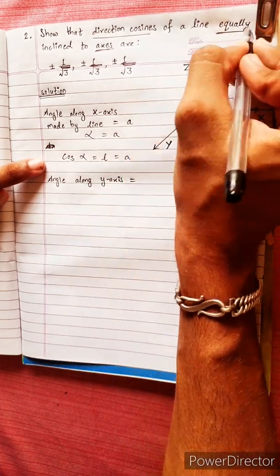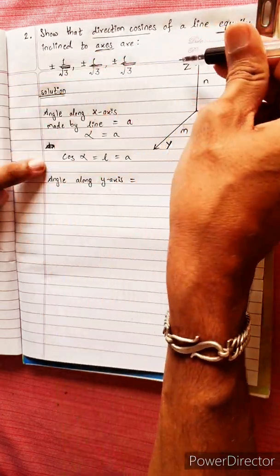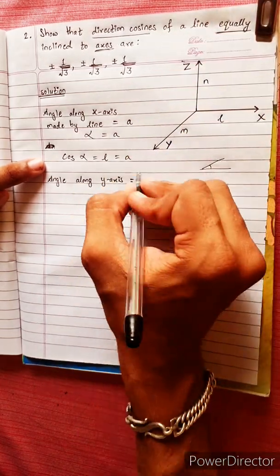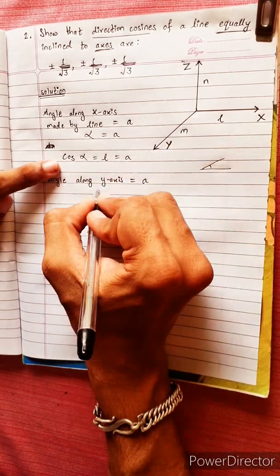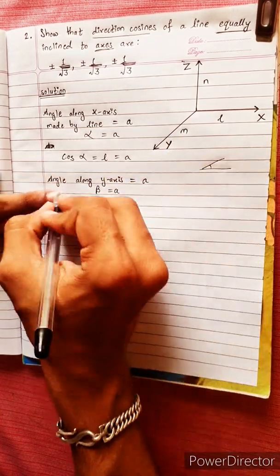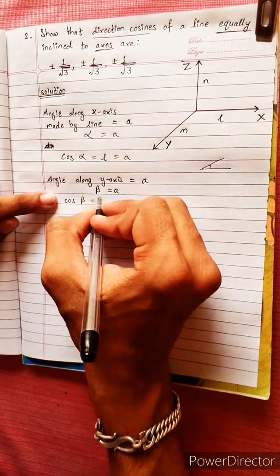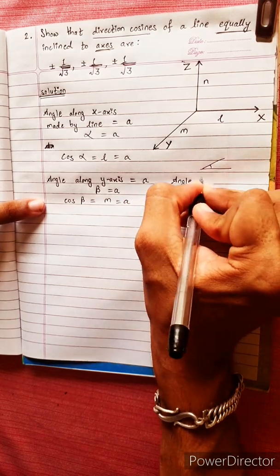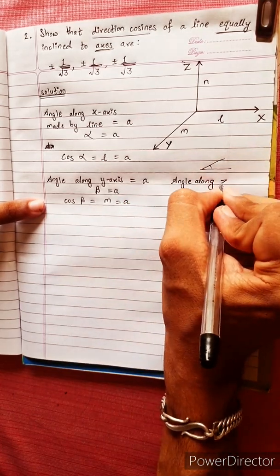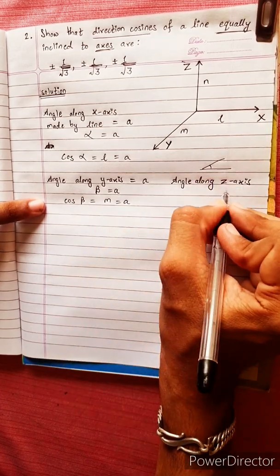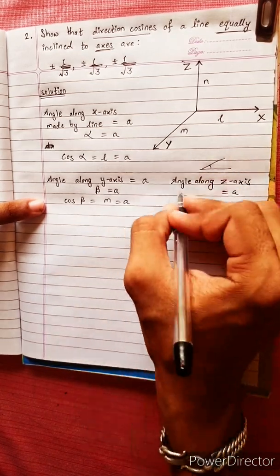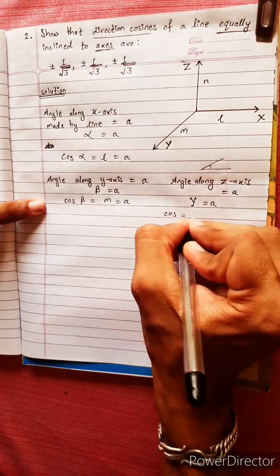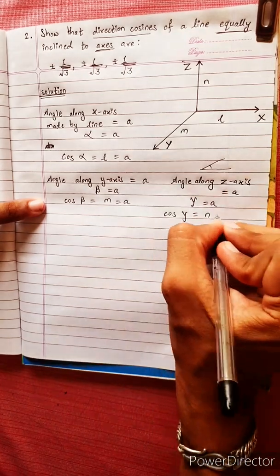The y-axis is equally inclined, so the angle is also equal to A. Beta equals A, so cos beta equals M. Similarly, angle along the z-axis is the same angle A, and gamma equals A, so cos gamma equals N equals A.